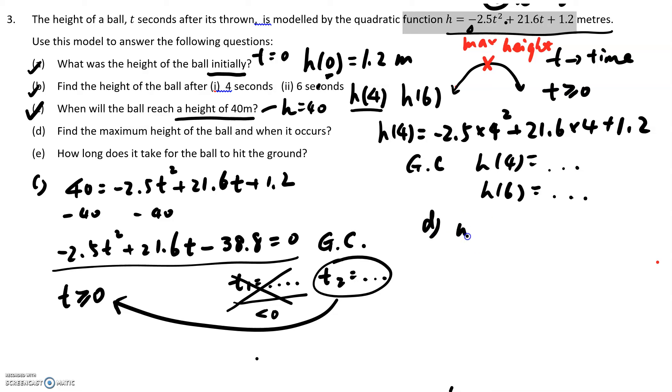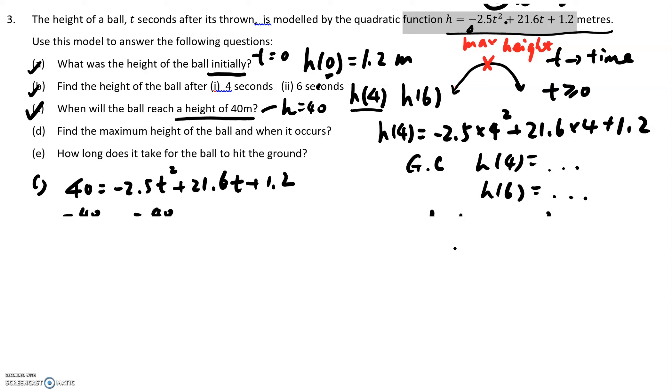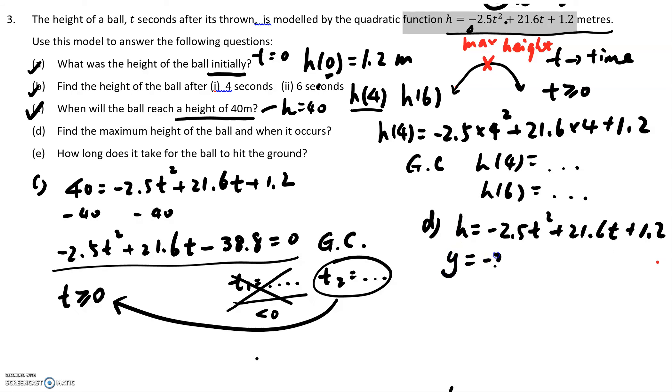So put h equals to negative 2.5 t to the power of 2 plus 21.6 t plus 1.2. You don't have to put h and t. What you do is you put y equals to negative 2.5 x squared plus 21.6 x plus 1.2 into your calculator. You put this into your graphic calculator, into functions. And then you all know how to make a curve with your graphic calculator. So put this into your graphic calculator and then press solve and then max.